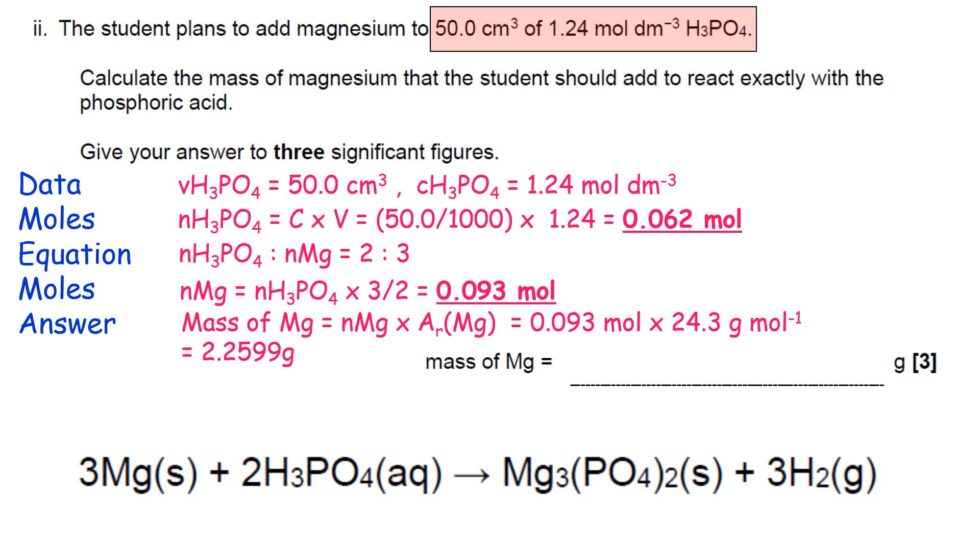And to get the mass from that, you work out the 0.093 times the relative atomic mass of magnesium, 24.3. And that gives you 2.2599 as your calculator value, which converts to 2.26 if you're asked for three sig figs. So that's what goes in there.